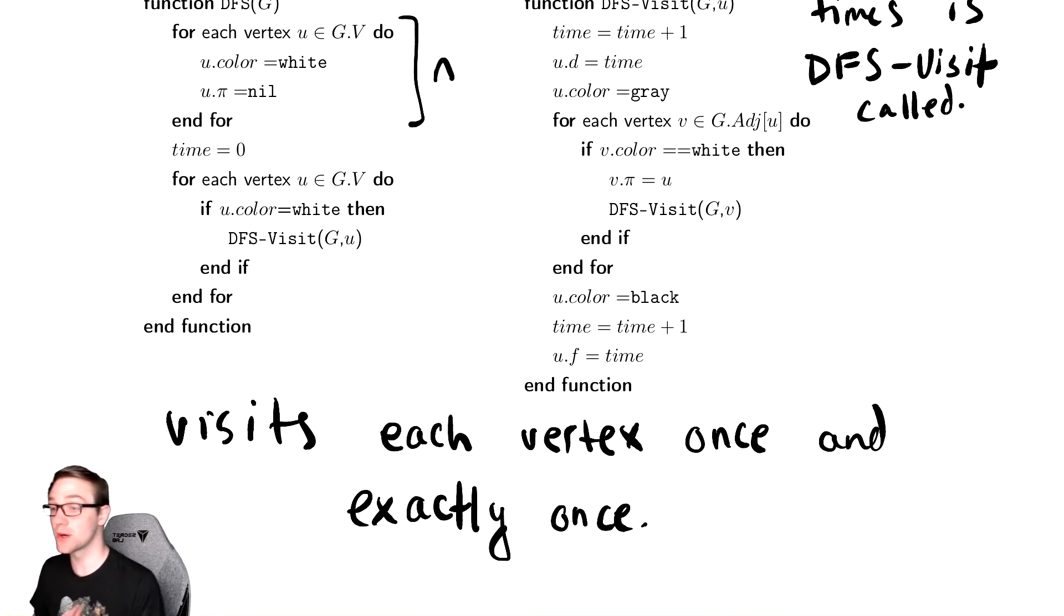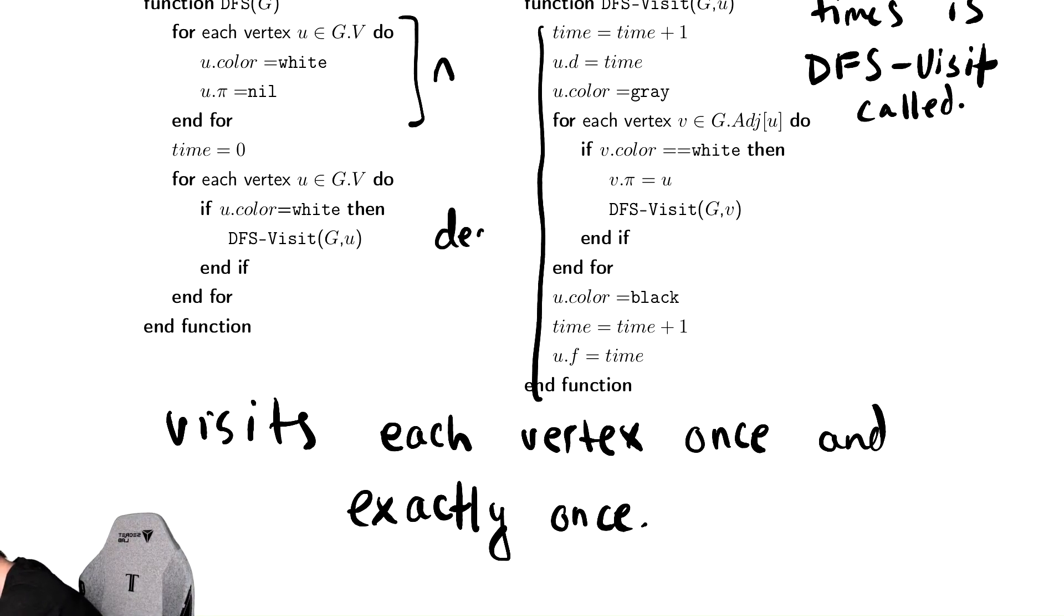And what does DFS-Visit do? Ignoring the recursive call, which we're already figuring out how many times that occurs, it does the exact same thing as breadth-first search. It runs through the adjacency list. So everything here, ignoring the recursive call, is degree of u time.